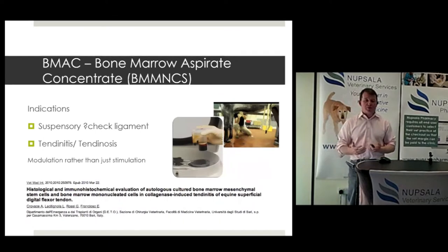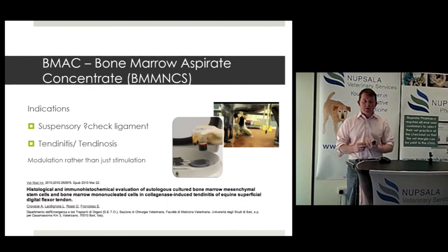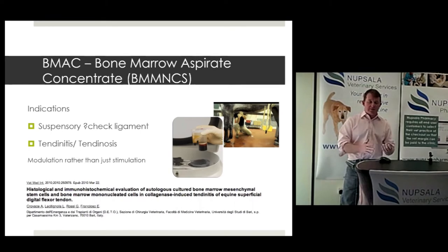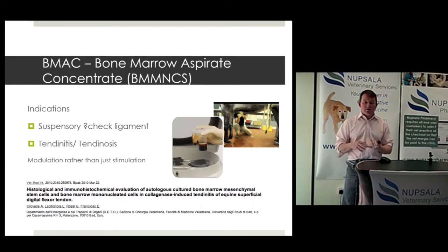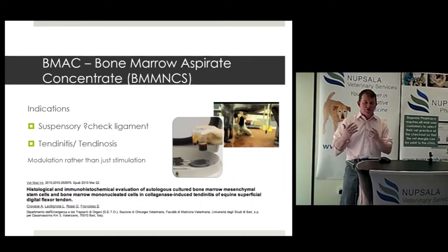It doesn't really matter if it's a bone marrow aspirate concentrate, an adipose nucleated cell fraction, or what we're now seeing with the launch of Articel 40 by Boehringer — an allogeneic cell. We're applying cells. These cells — whether called stem cells, progenitor cells, or pericytes — upregulate paracrine function, which is a controlling, modulating mechanism. We're using these cells to modulate control.